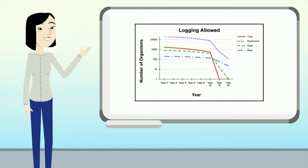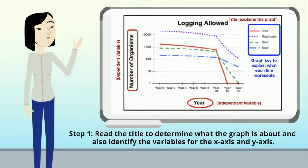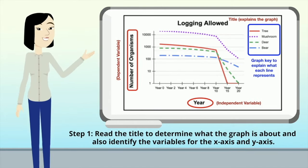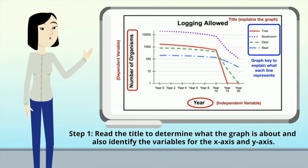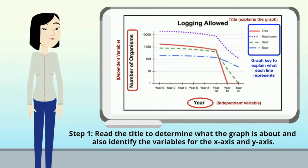Let's do it again with this graph. Step one: the title is about logging allowed. The x-axis is the year, and the y-axis is number of organisms. Notice there's a key on the side — they include that when there's more than one line to identify what the lines are and what they represent.